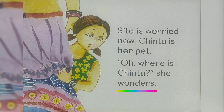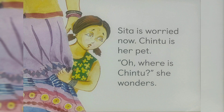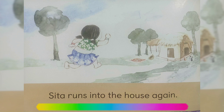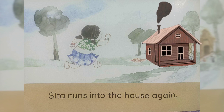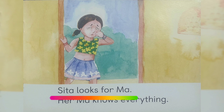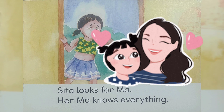She wonders. Oh, Chintu kaha hai? Usse tajub hua. Sita runs into the house again. Sita phir se ghar mein dhorti hai. Sita looks for maa. Her maa knows everything. Sita apni maa ko dhundti hai. Unki talash kerti hai. Sita ki maa ko sab kuch pata hota hai.